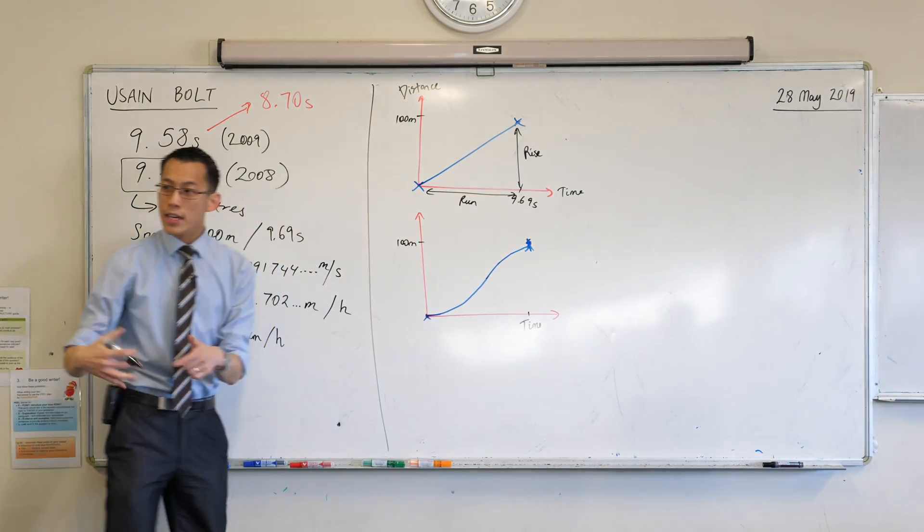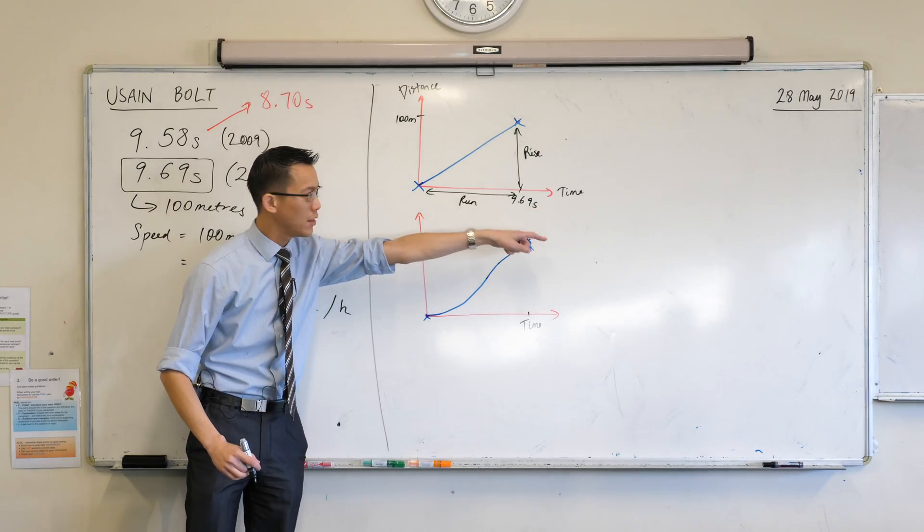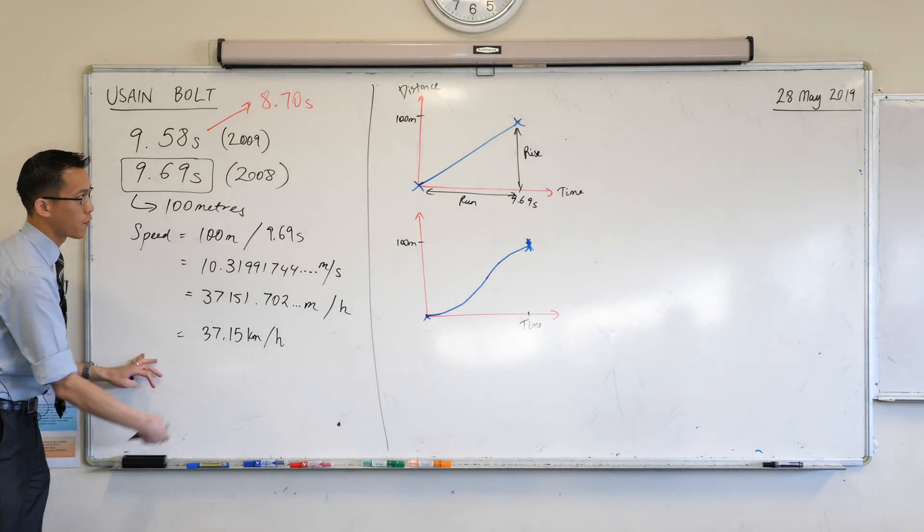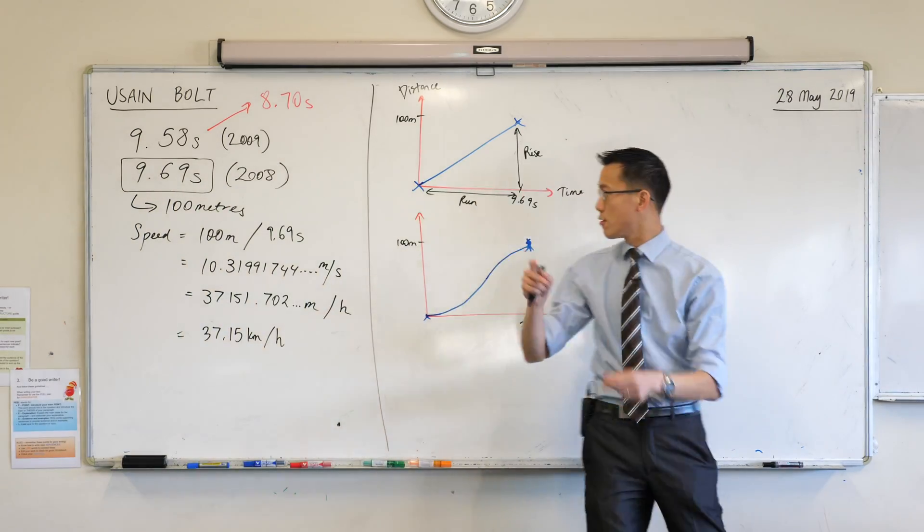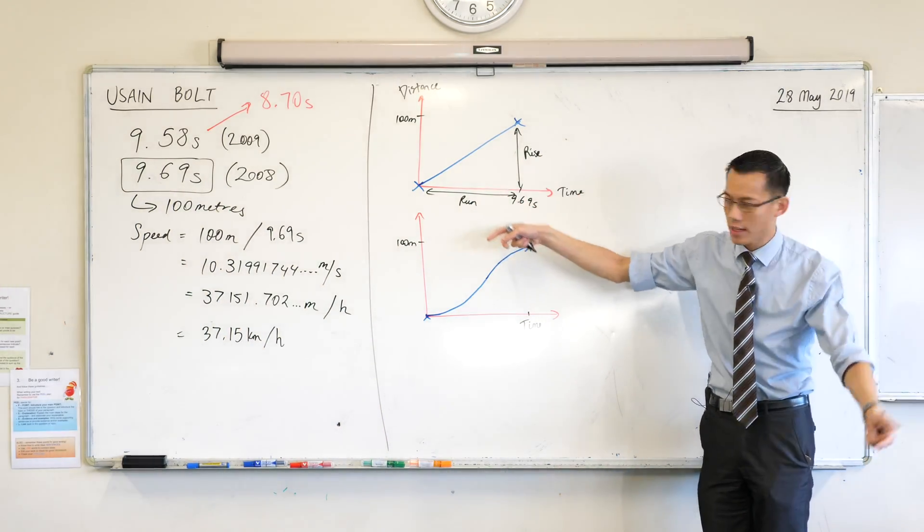Thank you very much. So when we think of speed as distance over time, what you're really calculating here, this 37.15 number, right? What it really represents is the rise over run. What is this called? This is called the gradient. Thank you very much.